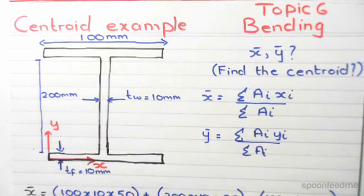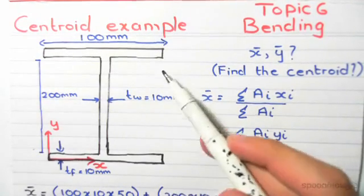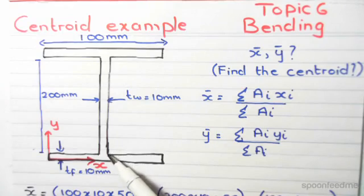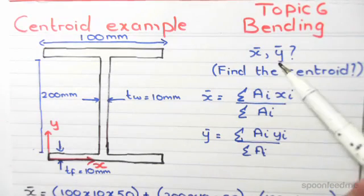As you know or previously seen, it has two flanges - flange one here and flange two here - and it's got the web which is the vertical element. We need to find x̄ and ȳ, in other words, the centroid.